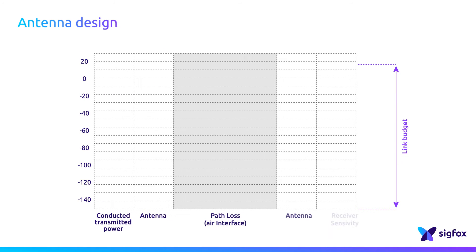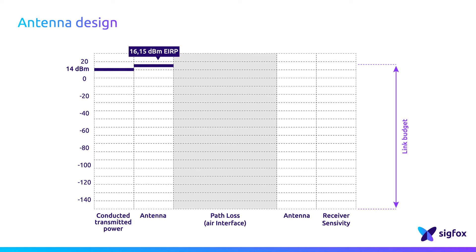The gain is an important performance parameter you have to consider when choosing the antenna for your connected device, because it impacts the link budget between a transmitter and a receiver. If the antenna performance is not good enough, the radiated device performance will also fall short. Keep in mind that if the power radiated by the device is reduced by 6 dB, the theoretical propagation distance is divided by 2. Thus, the service level of the device on the network will be impacted.